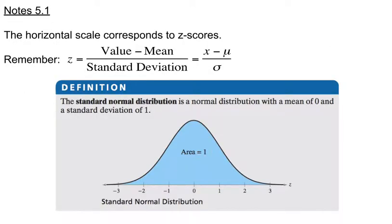The horizontal scale of the standard normal distribution corresponds to z-scores. Recall our z-score formula: we take our data value minus the mean and divide by the standard deviation. The center of our distribution, which is the mean, is centered right at a z-score of zero. Since it is a normal distribution, the area under the curve is one. The z-scores of negative one and positive one are one standard deviation below and above the mean, and those are the inflection points of the normal curve.